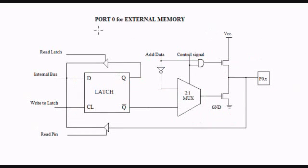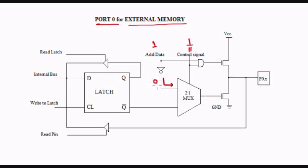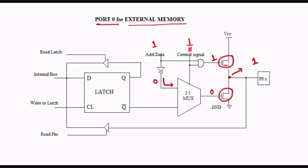Here we will see how port 0 is used for external memory. When port 0 is used for external memory, the control signal has to be 1, so that it allows the address and data bit to pass through. First, we will consider address bit as 1. We will get 0 as the inverted data, and we get 0 here. We get 1 ANDed with 1, which is 1, so this is a closed switch and this is an open switch. If I go and measure the value at this point, it is going to be 1, which is the value of VCC because of this closed switch.